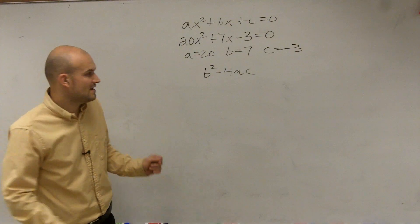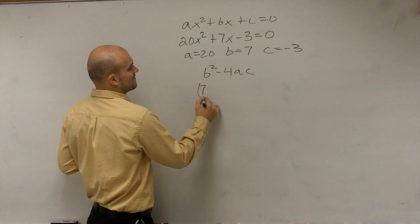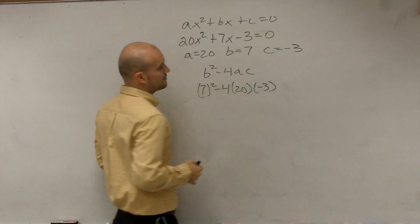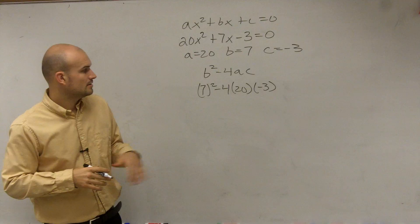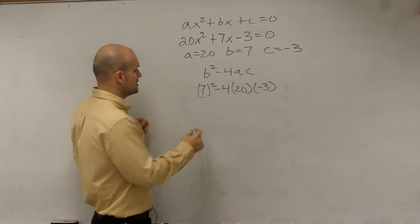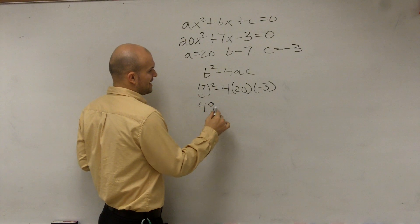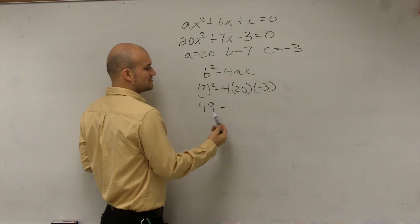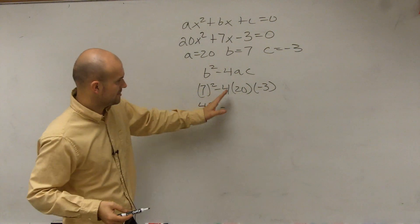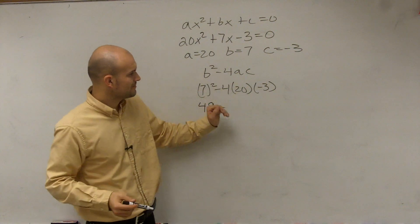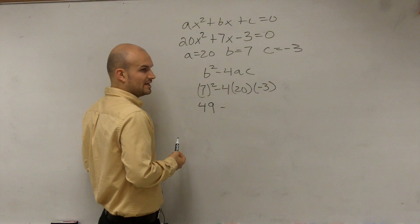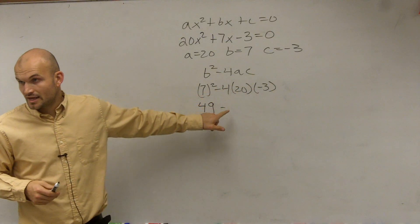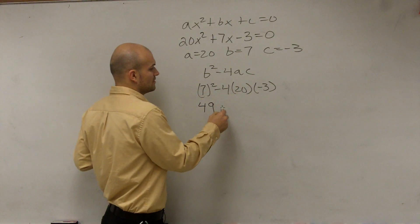Therefore, let's go ahead and plug in the values. So we have 7 squared minus 4 times 20 times c, which is negative 3. Now I can simplify. Let's do 20 times negative 3, which is going to be negative 60. Negative 60 times negative 4 is a positive 240.